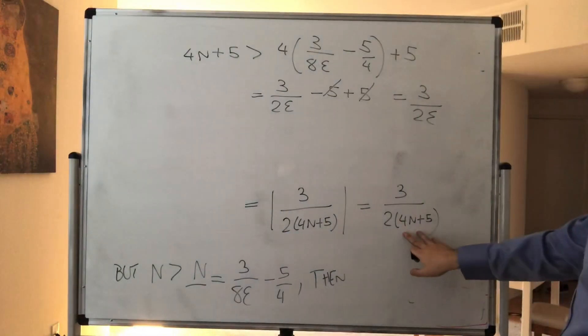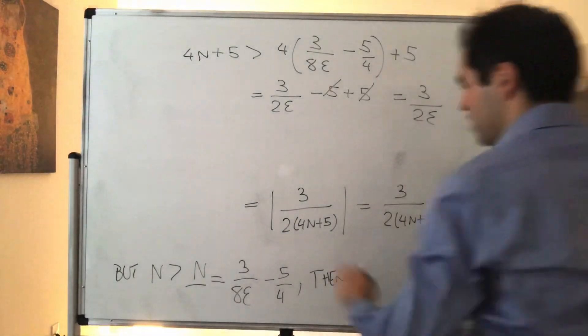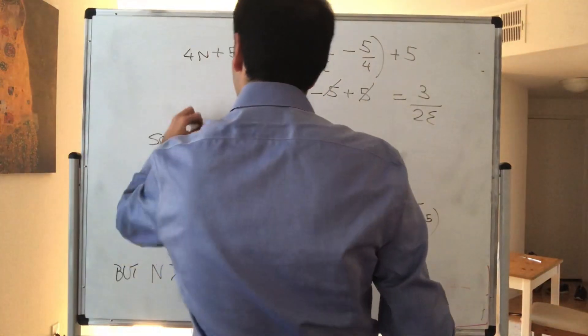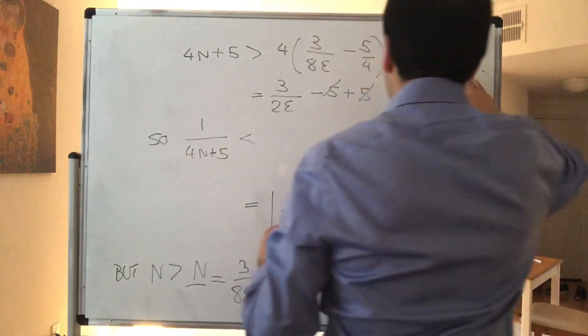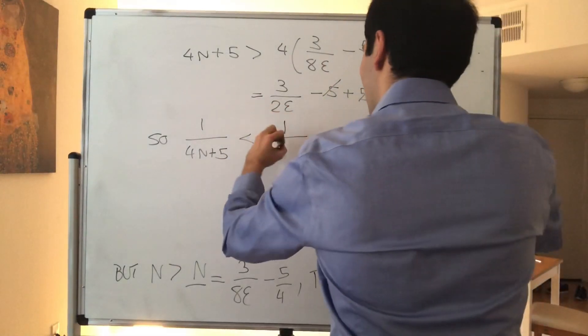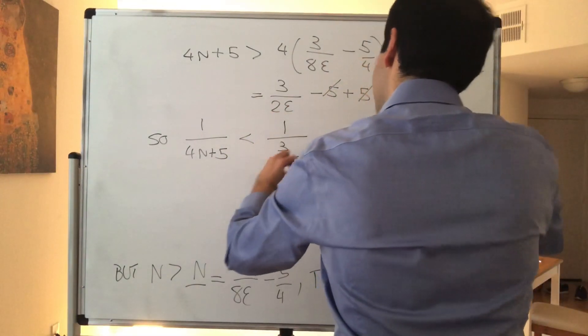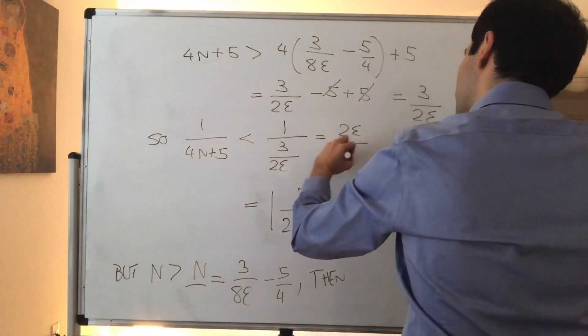And therefore, if you now take reciprocals, so 1 over 4N plus 5, then becomes less than 1 over that, so 1 over 3 over 2 epsilon, which is 2 epsilon over 3.